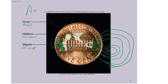These are called the three auditory ossicles. The word 'ossicles' refers to bone — like osteocyte, osteoblast, and osteoclast; all the 'osteo' prefixes refer to bone.